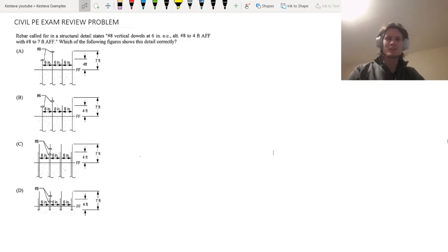Let's jump right into it. This one's pretty straightforward today, but it's all about tackling the basics because we want to make sure that we get every single one of the bunnies. You got to get the layups. They're far and few in between on the PE exam, but when you get them, it's going to absolutely increase the chances of you passing and doing well. Rebar called for in a structural detailing states: number 8 vertical dowels at 6 inches on center, alt number 8 to 4 feet AFF with number 8 to 7 feet AFF. Which of the following figures shows this detail correctly?